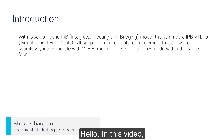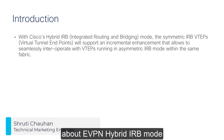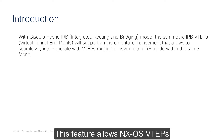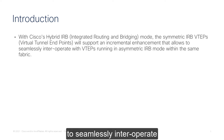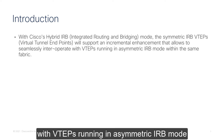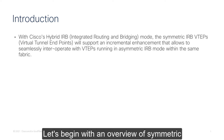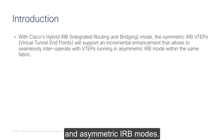Hello, in this video we are going to talk about EVPN Hybrid IRB mode on Nexus 9000. This feature allows Nexus OS VTEPs operating in symmetric IRB mode to seamlessly interoperate with VTEPs running in asymmetric IRB mode within the same fabric. Let's begin with an overview of symmetric and asymmetric IRB modes.